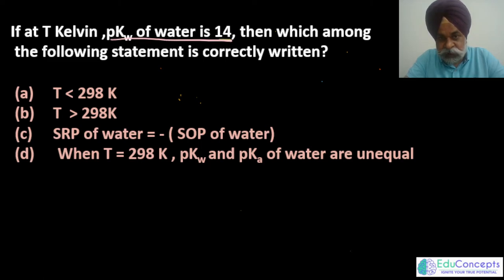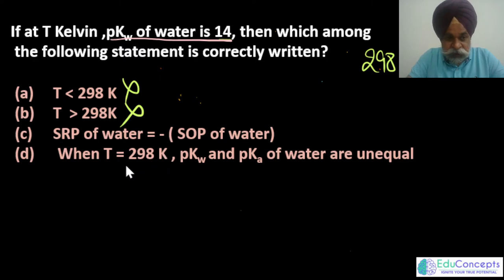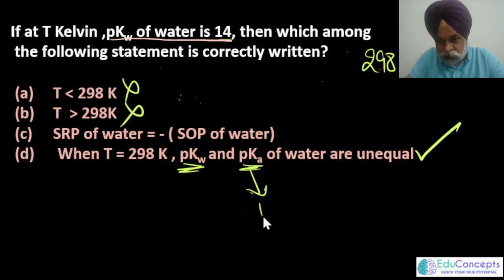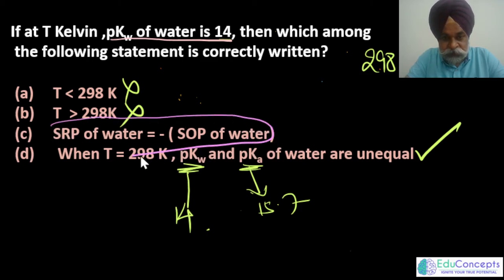When pKw = 14, that means we are at 298 K — so statements about a different temperature are wrong. The third statement discusses that the SRP of water equals the negative of the SOP of water — this is an important point to discuss. Option D states that at T = 298 K, pKw and pKa of water are unequal. This is a correct statement because pKa = 15.7 and pKw = 14 — they are different.